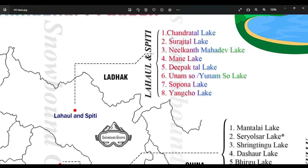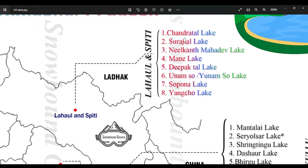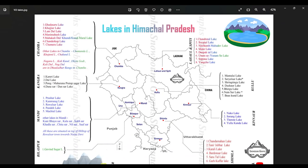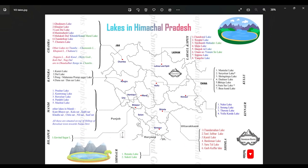The lakes in Lahaul-Spiti include Chandra Tal, Suraj Tal, Neelkanth Mahadev Mani Lake, Deepak Tal, Unam Sam or Yunam Sam Lake, Supona Lake, and Yamcho Lake. So that was all about lakes in Himachal Pradesh — hope it helped you. See you in the next video.